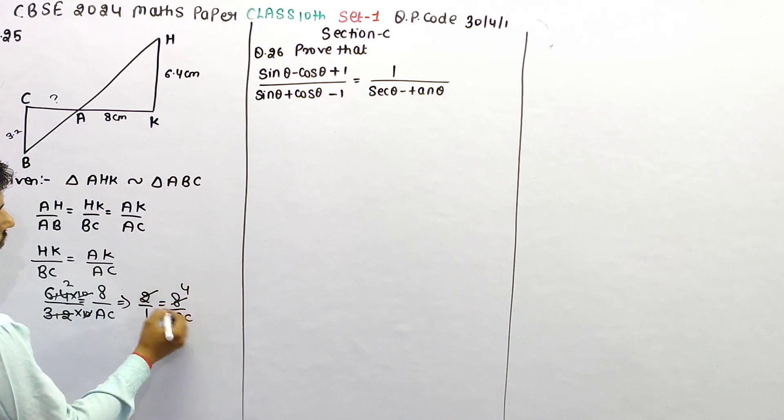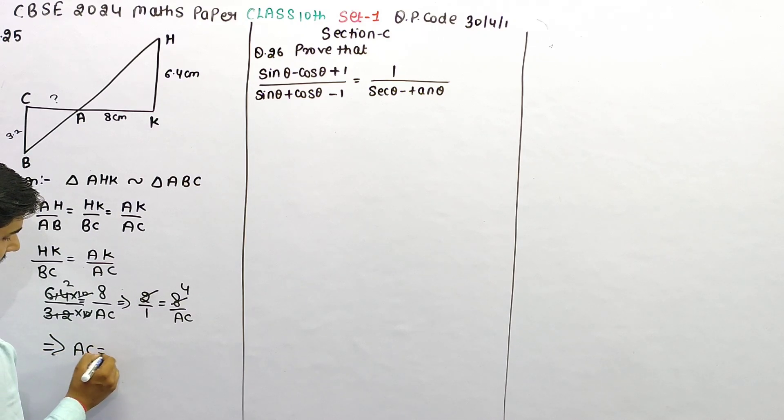Cross multiply to get AC is equal to 4 cm.